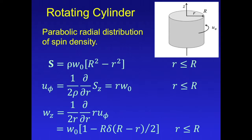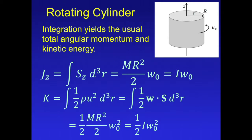As an example of spin angular momentum, consider a rotating cylinder. It has a parabolic radial distribution of spin density, as shown in the equation for S. The equation for the velocity is simply the radius times the angular speed, and the equation for vorticity is simply the angular speed plus a delta function at the edge of the cylinder. Integration yields the usual total angular momentum and kinetic energy.